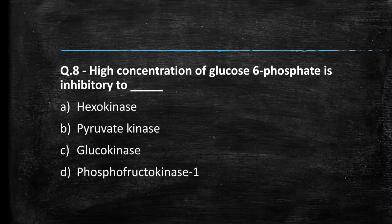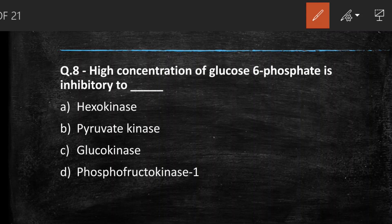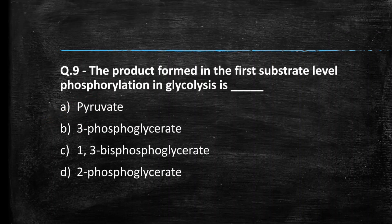Next question: a high concentration of glucose-6-phosphate is inhibitory to — (A) Hexokinase, (B) Pyruvate kinase, (C) Glucokinase, (D) Phosphofructokinase-1. The right answer is option A, hexokinase. This is feedback inhibition, a form of allosteric regulation: glucose-6-phosphate binds to the allosteric site of hexokinase and inhibits its activity.